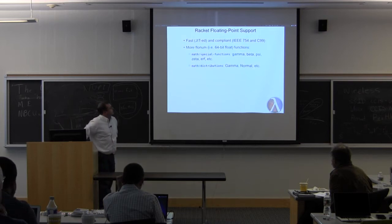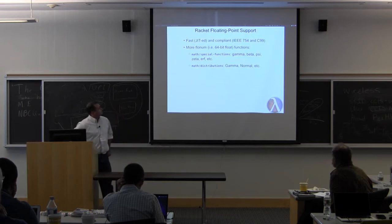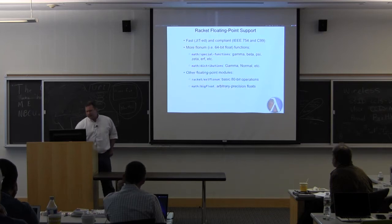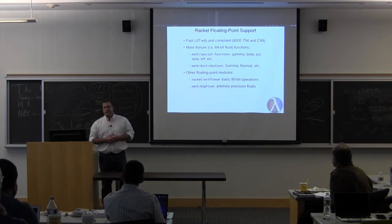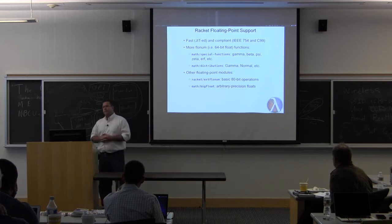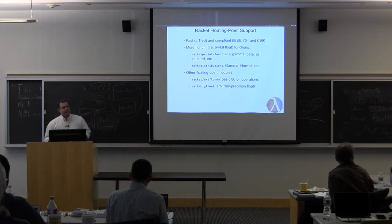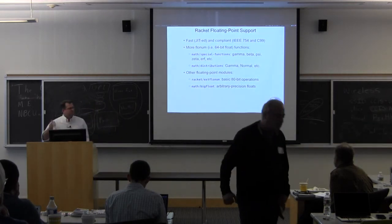So I built stuff. I built stuff that I needed and then made sure it was good enough to share and you can find it in special functions and distributions. You can get 80-bit floating point support there and big floats in the math library you can get as much precision as you like. Calculate pi to 6,000, 60,000, 6 million decimal places. Kind of fun.